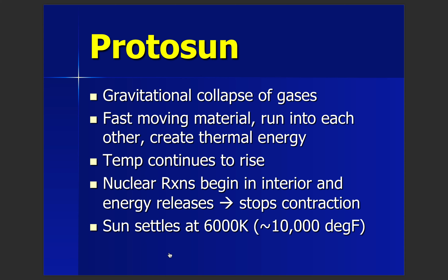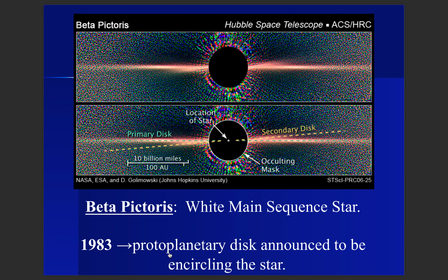Our sun settles at its surface at about 6,000 degrees Kelvin, equivalent to about 10,000 degrees Fahrenheit. We are able to see protoplanetary disks and protostars forming in other regions of our universe. This was one of the first images taken of an extrasolar planetary disk, called Beta Pictoris, in 1983. The star itself is blocked out, but we can see the disk of gas and dust — one of the first indications that a protoplanetary disk is forming around a star.